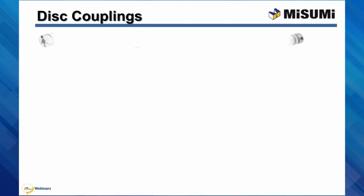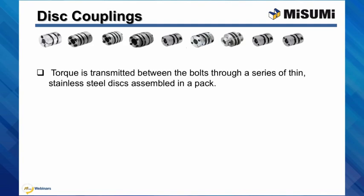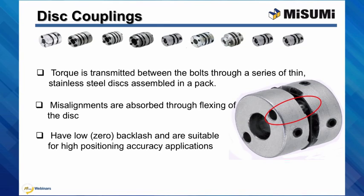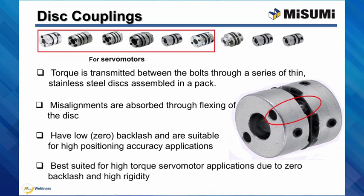Disc couplings are designed to transmit torque between the bolts through a series of thin stainless steel discs assembled in a pack. These bolts connect shaft hubs into a one-piece construction. Misalignments are absorbed through flexing of the disc. Disc material and shape adapt to a wide range of transmission capabilities. Disc couplings have low or zero backlash and are suitable for high positioning accuracy applications. They are best suited for high-torque servo motor applications requiring high rigidity and zero backlash. For servo motor applications, select a coupling with maximum torque capacity 5 to 10 times more than the motor's peak torque.